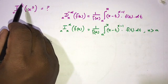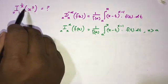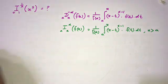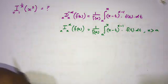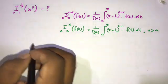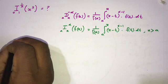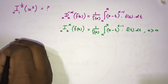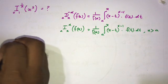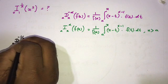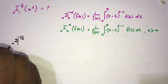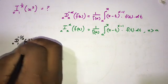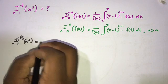Now today our question is: find the half integral of x to the third power from 0 to 1. So we can write this using d notation as d from 0 to 1 to the minus one-half of x to the third power.